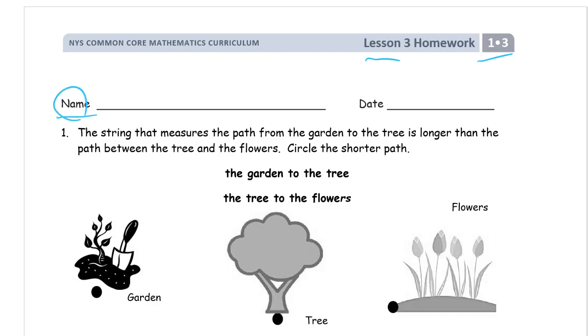The string that measures the path from the garden to the tree is longer than the path between the tree and the flowers. So this path here is longer than the path from the tree to the flowers. It says circle the shorter path.